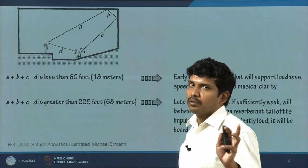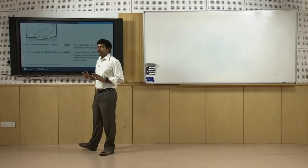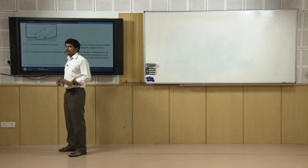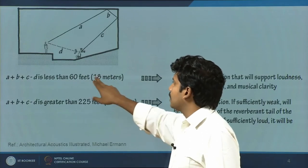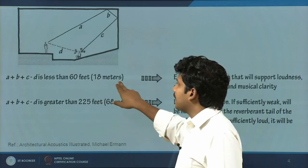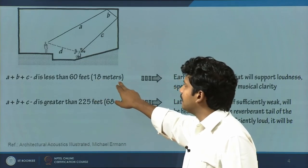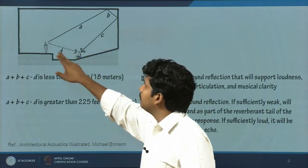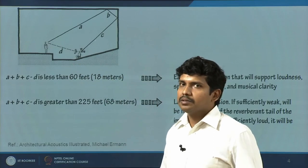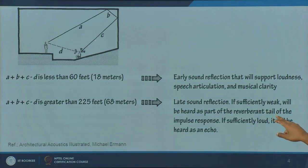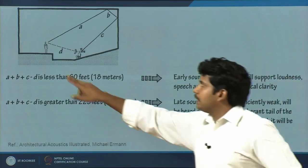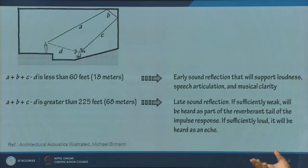We are converting the time domain into distance in meters. Taking 340 meters per second sound velocity, if you calculate C50 - in 50 milliseconds sound would travel 18 meters. So if the path difference A plus B plus C minus D is less than 18 meters, you receive reflected sound within 50 milliseconds. If it is greater, there is a lot of late sound reflection and each signal is masked by the late reflection. To avoid this, you have to control or enhance the early reflection.